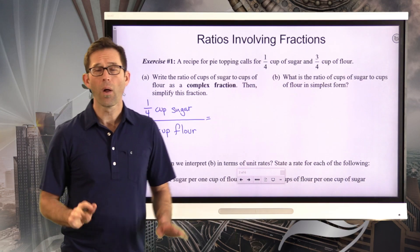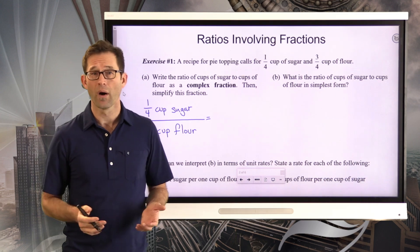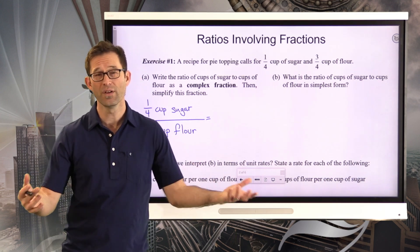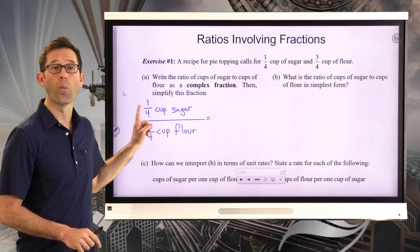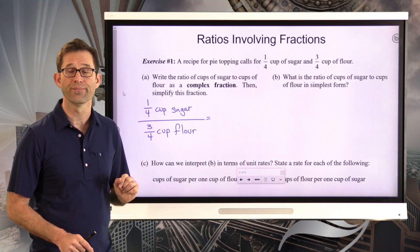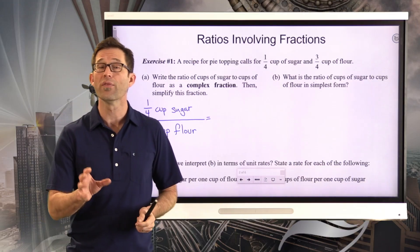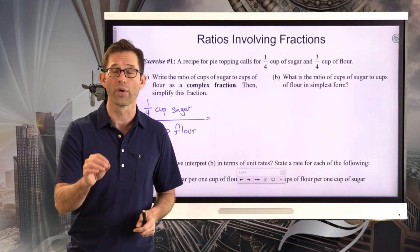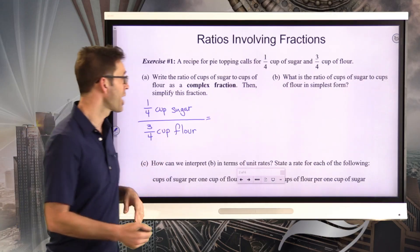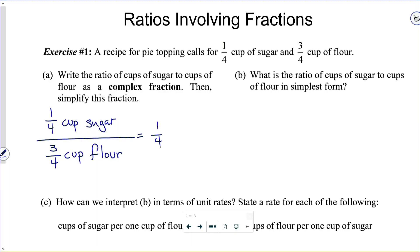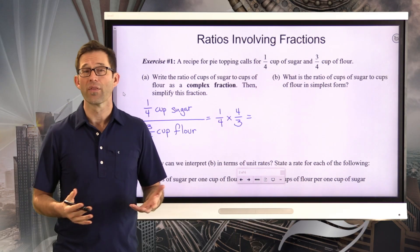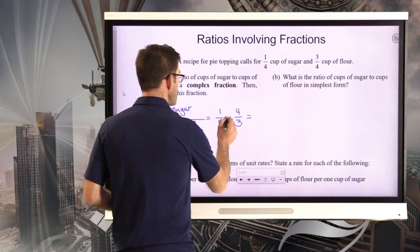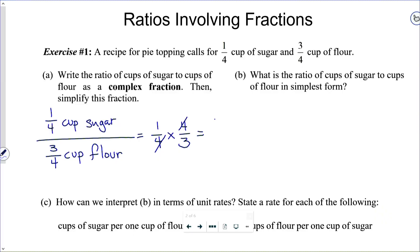Now I want to simplify this. Keep in mind, fractions are always about division, so I literally have one-quarter divided by three-quarters. In order to simplify a complex fraction, we use the fraction division algorithm, which says to keep the first fraction the same, change the division into multiplication, and multiply by the reciprocal of the second fraction. One of the great things about this particular case is that we've got some nice cross-cancellation going on between the fours, and then we just end up with one-third.